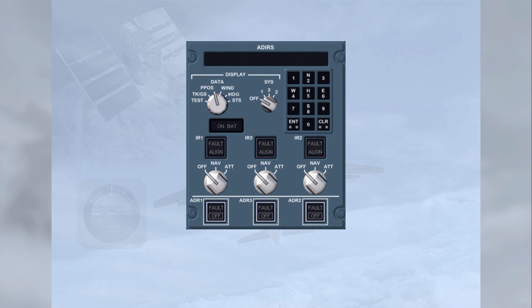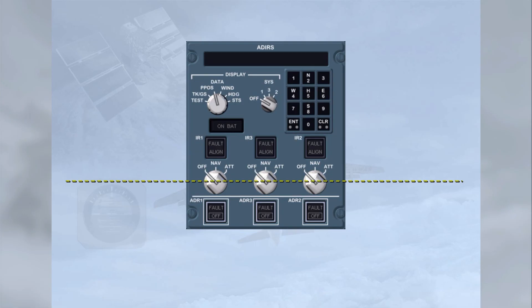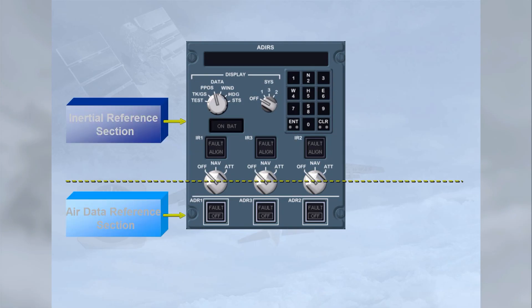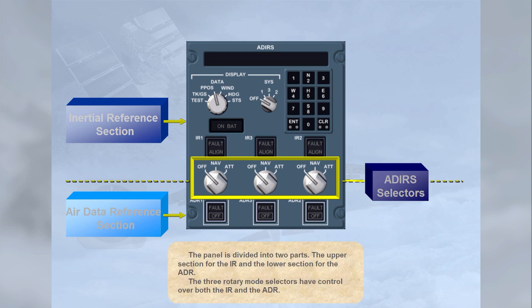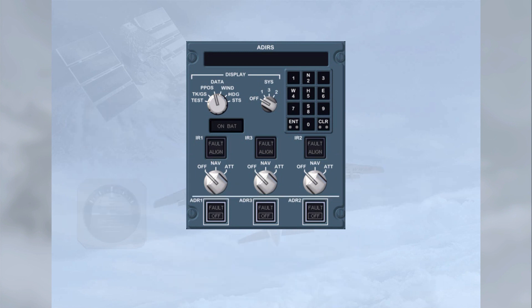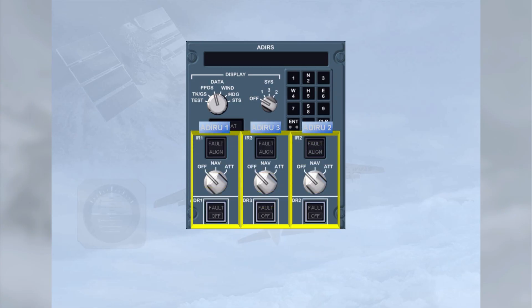The ADR control display unit panel is divided into two parts: the upper section for the IR and the lower section for the ADR. The three rotary mode selectors have control over both the IR and the ADR. The controls and indicators for the individual ADRUs are grouped and arranged in the order 1, 3, and 2.